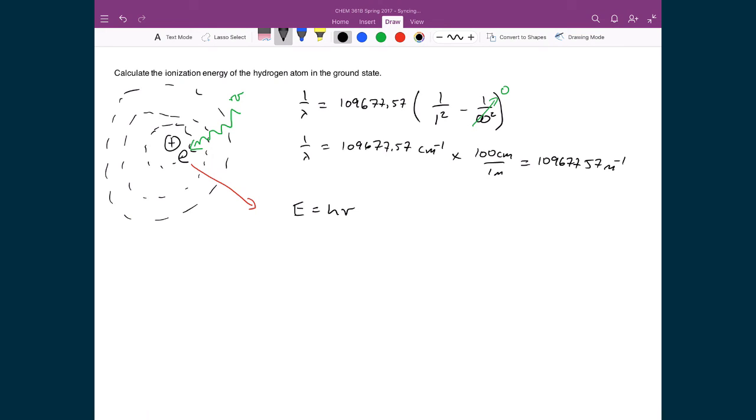That energy is equal to hν, which we can again write as hc over λ. And so I have Planck's constant times the speed of light divided by the wavelength or multiplied by the wave number. So I would write 6.626 times 10⁻³⁴. I'm going to have 2.998 times 10⁸. And I'm going to multiply that by this 1.09677 times 10⁷. And so in the end, I'm going to get 2.179 times 10⁻¹⁸ joules.